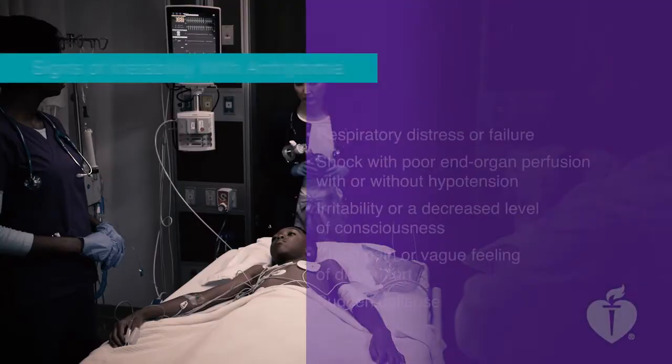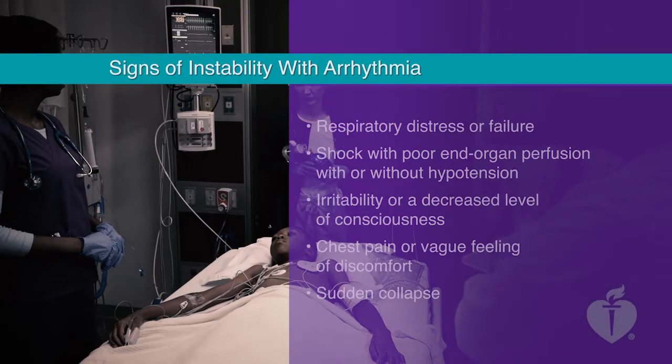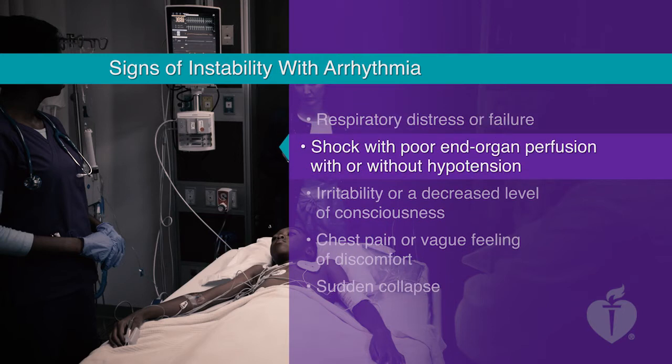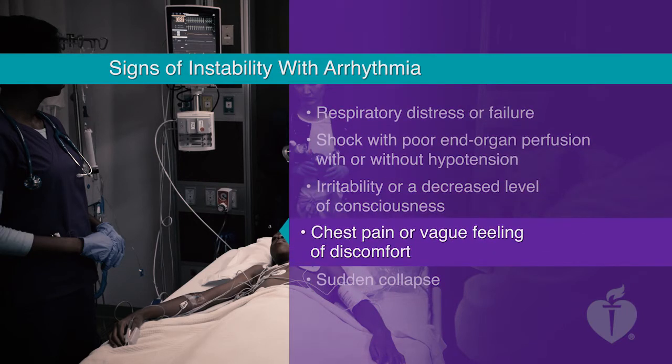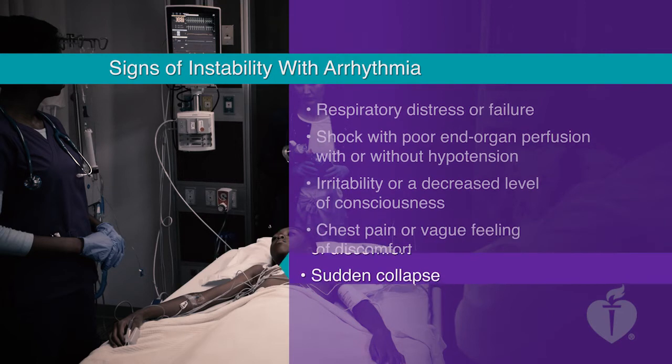To determine appropriate action when evaluating the heart rate and rhythm in any seriously ill or injured child, you must consider the child's typical heart rate and baseline rhythm, level of activity, age, and clinical condition. The signs of instability in a patient with arrhythmia are respiratory distress or failure, shock with poor end-organ perfusion — which may occur with or without hypertension — irritability or a decreased level of consciousness, chest pain or a vague feeling of discomfort in older children, and sudden collapse.